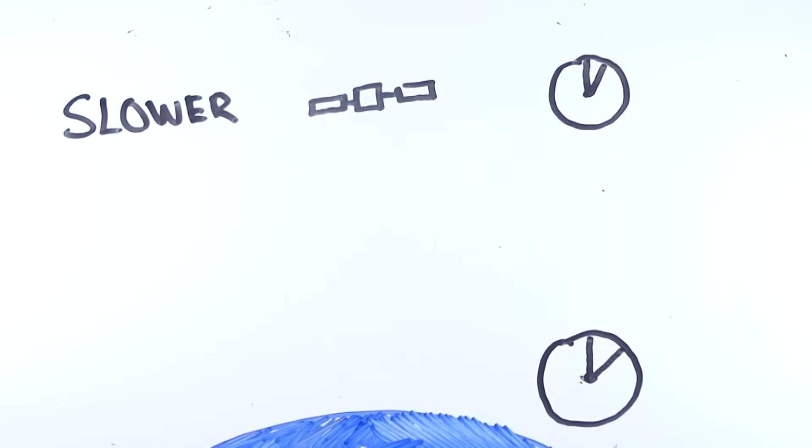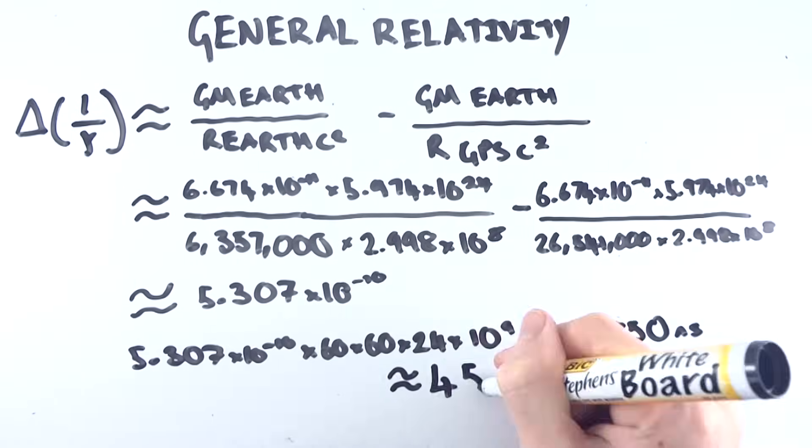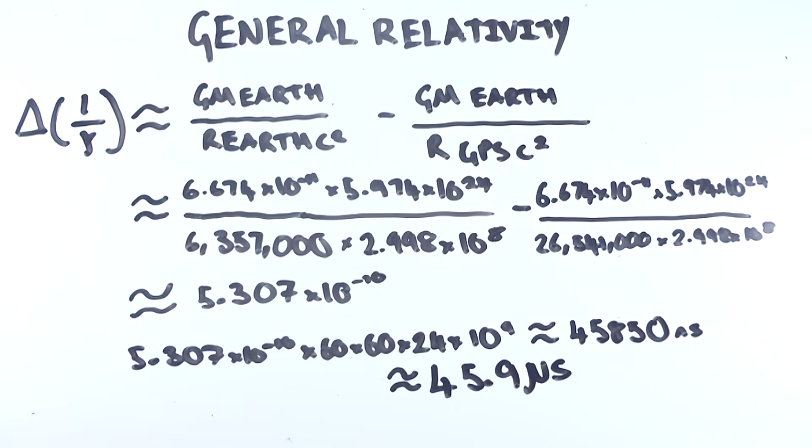The effect of the gravitational frequency shift is far greater than the 7 microsecond per day delay due to the velocity relative to Earth. As the theory states that a clock closer to a massive object will be slower than a clock further away, the atomic clocks on board the GPS's are faster by about 45.9 microseconds per day.